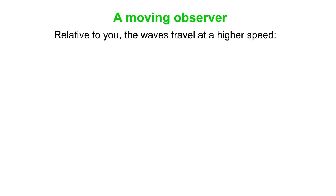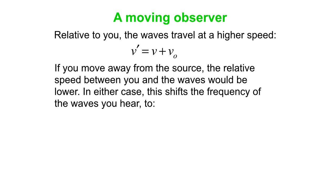Okay, so what happens is the waves, relative to you, travel at a higher speed. Of course, they're not actually traveling through the medium any faster, but relative to you they are. So this effective speed is V prime, is the V through the medium plus the V of the observer. And, of course, if you move away from the source, then that would be a minus sign instead.